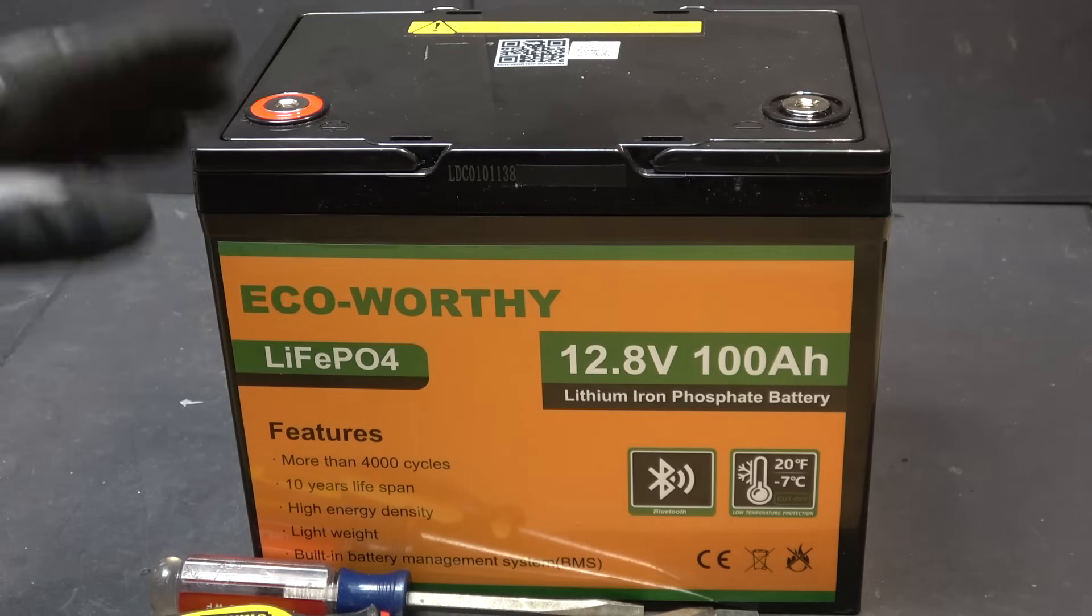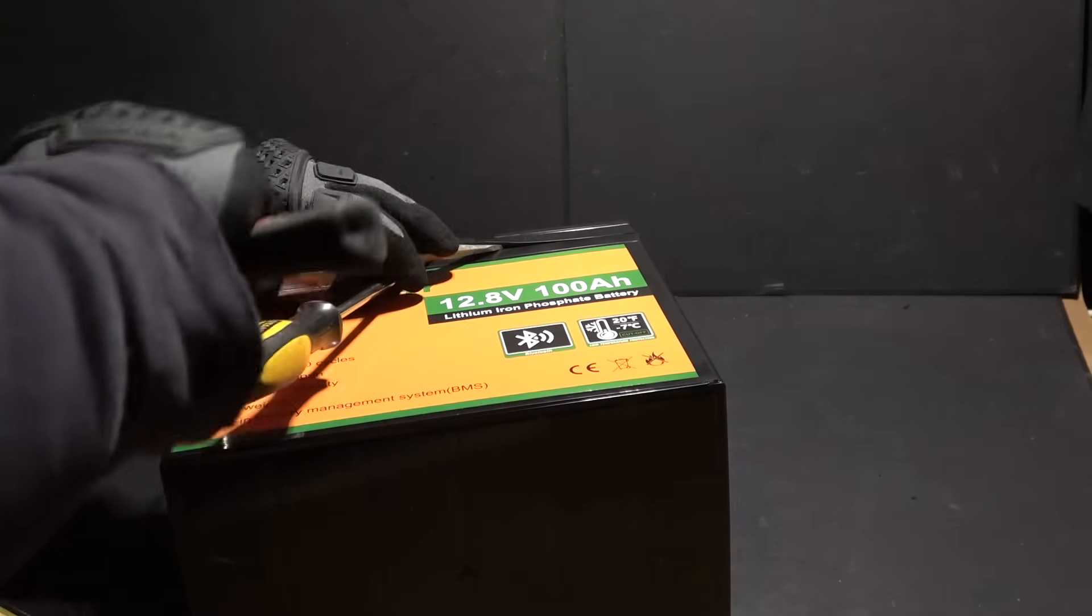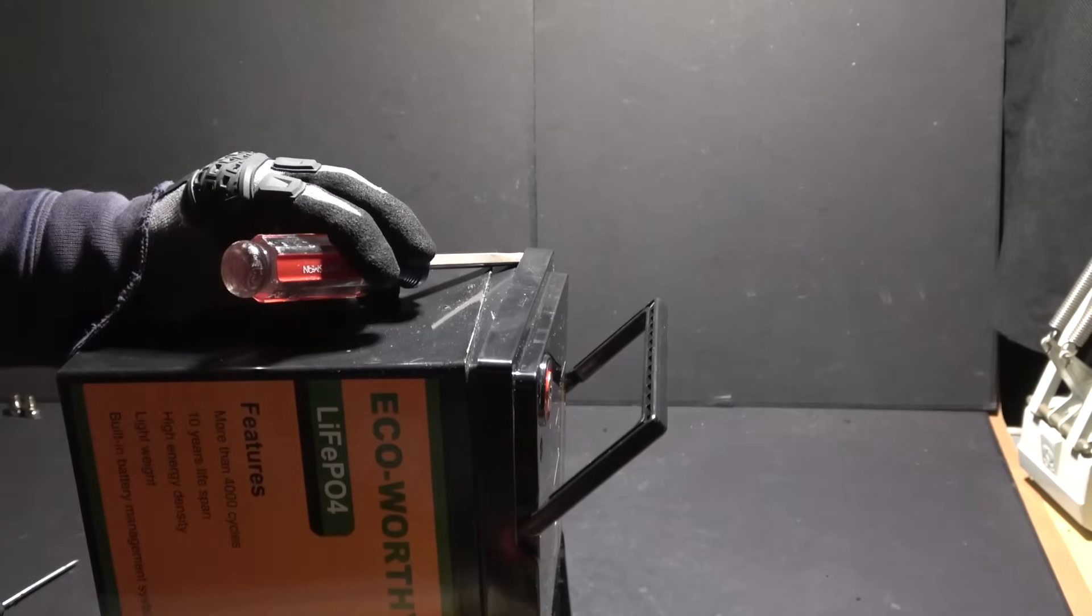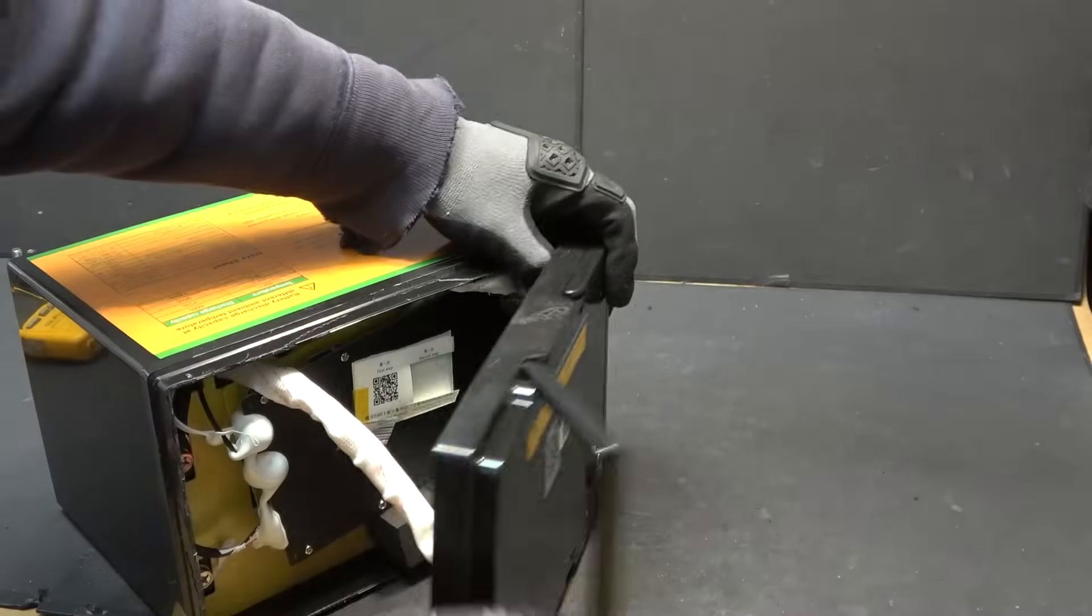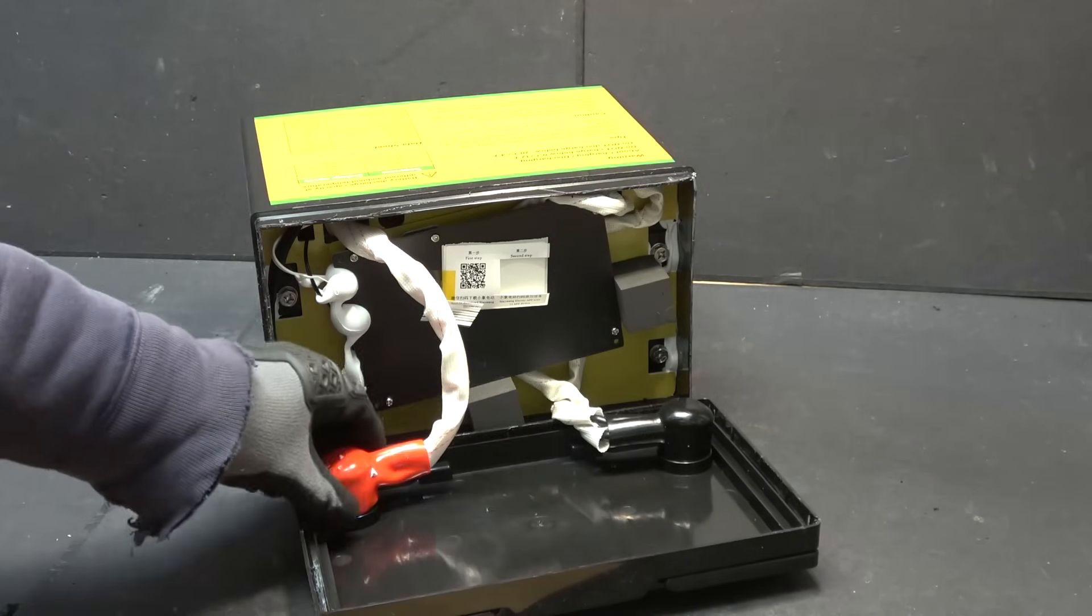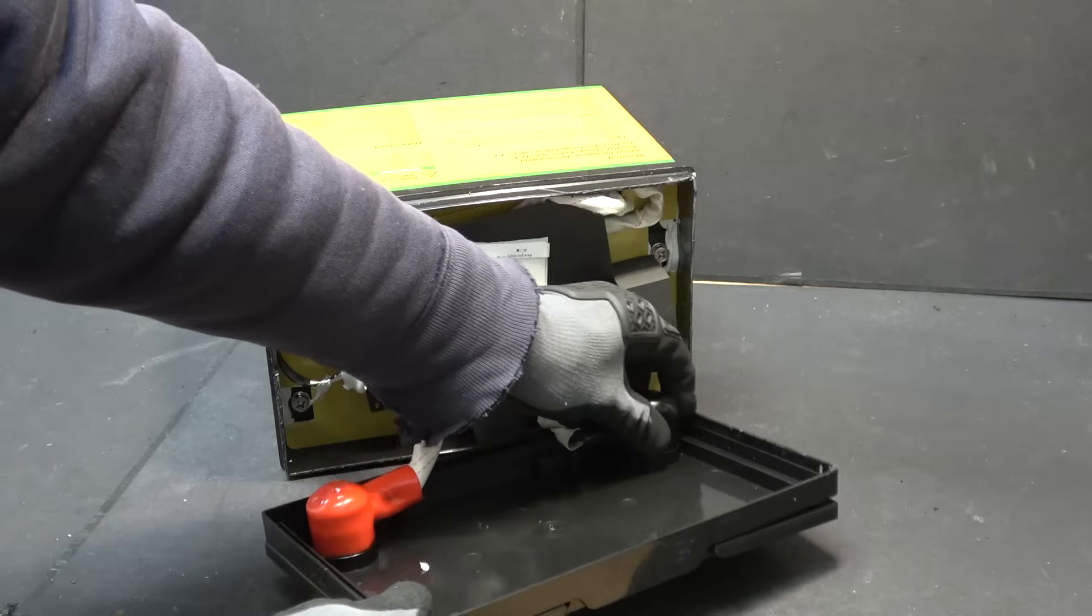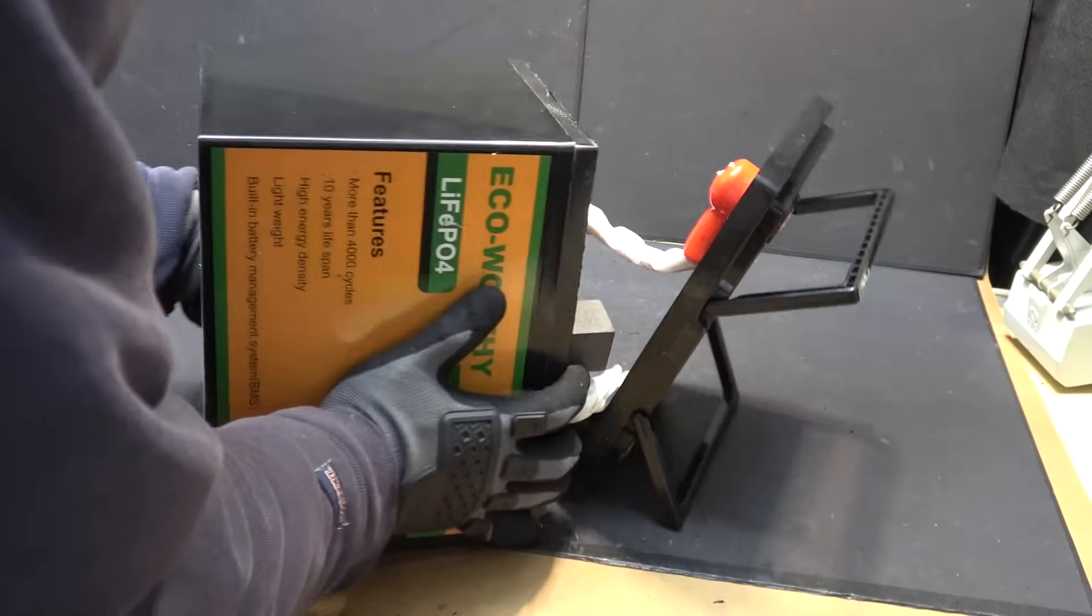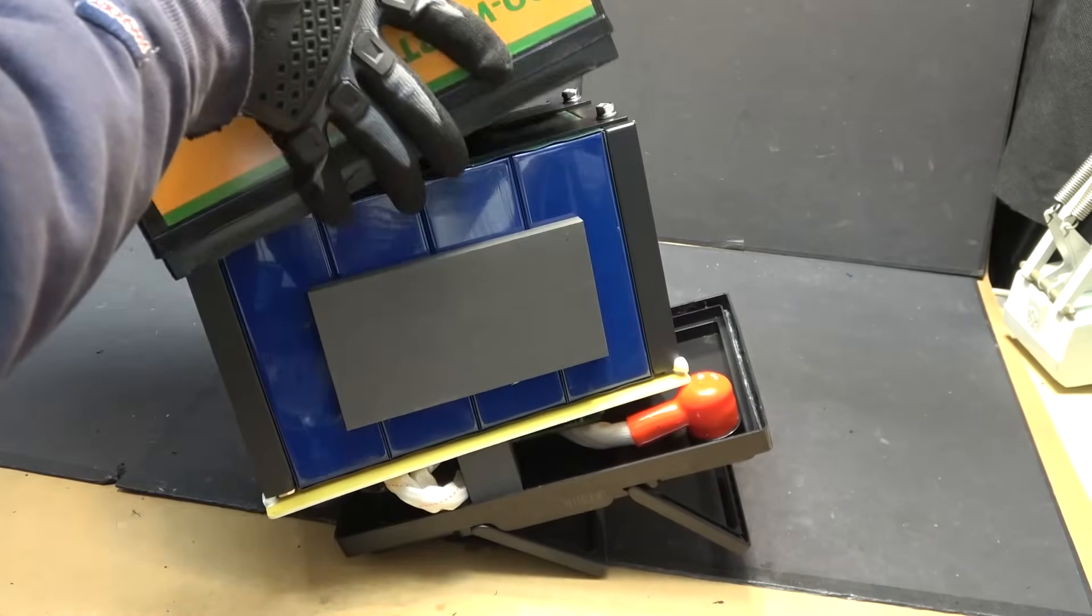It's time for a teardown. Let's go ahead and open up the top cover and see what's inside. First impression, check out this insulator. I've never seen such a nice rubbery thick insulator for the terminals like this. Let's take a first look inside the battery. Everything is nice and neat.